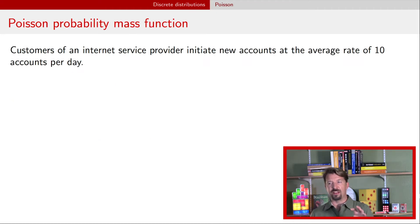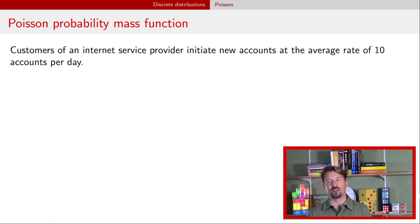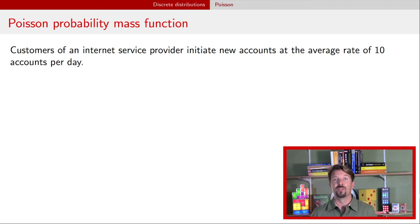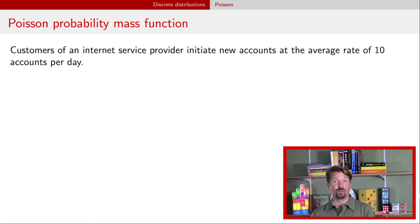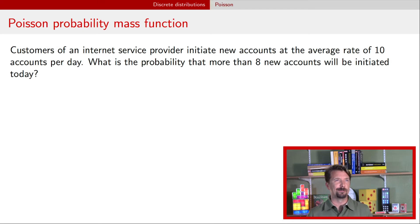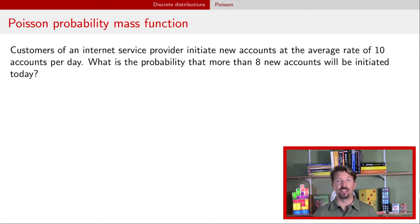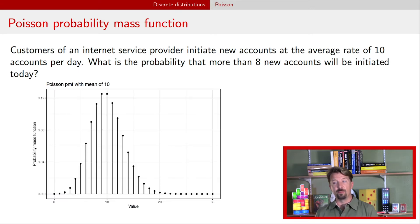Here's an example. Suppose we are an internet service provider recording how many new customers in some geographical region sign up for new service on a daily basis. From historical records, we know that on average about 10 people sign up per day, so we use that as our rate parameter for the Poisson. We want to find the probability that more than eight new accounts are initiated on a particular day. To start, one thing you might want to do is plot the probability mass function.